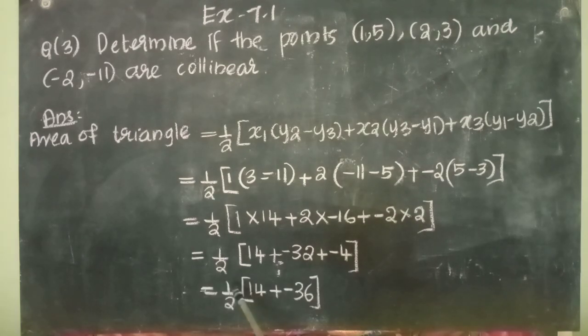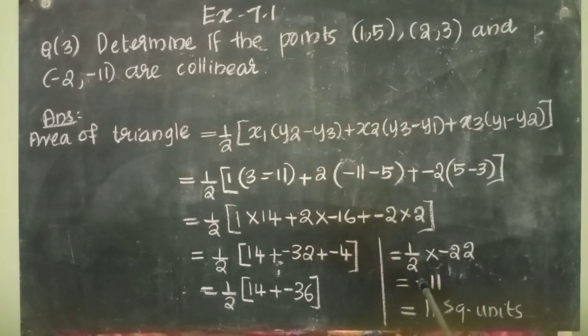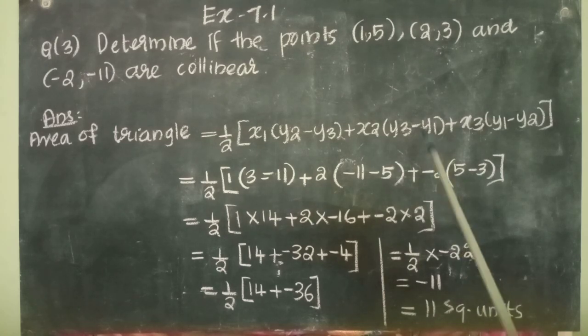That is equal to half into 14 plus (-36). That is equal to half into (-22) equals (-11). The number is negative so consider only the numerical value. We got 11 square units.